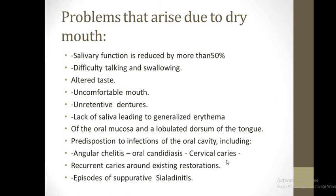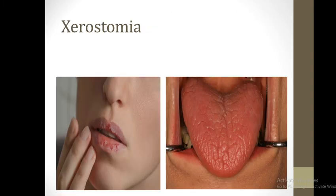Further complications include cervical caries, recurrent caries around existing restorations, and episodes of suppurative sialadenitis. This is a patient with xerostomia — you can see she has dry lips, and the tongue looks completely dry.